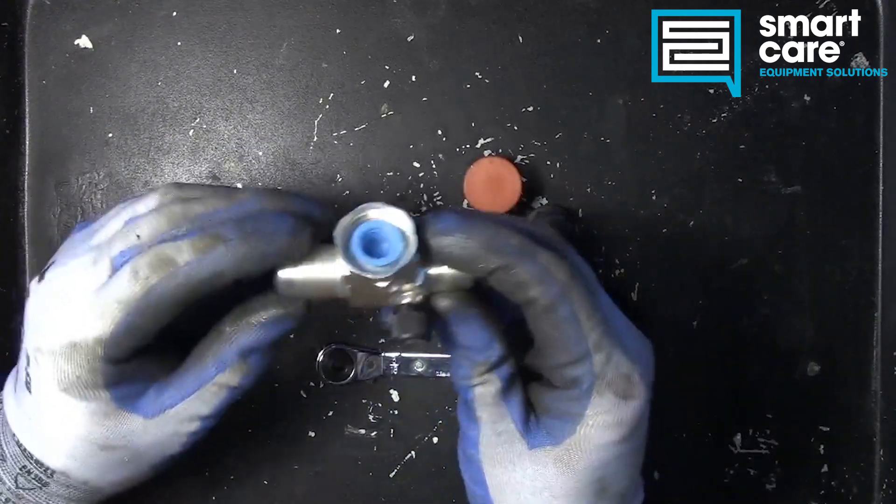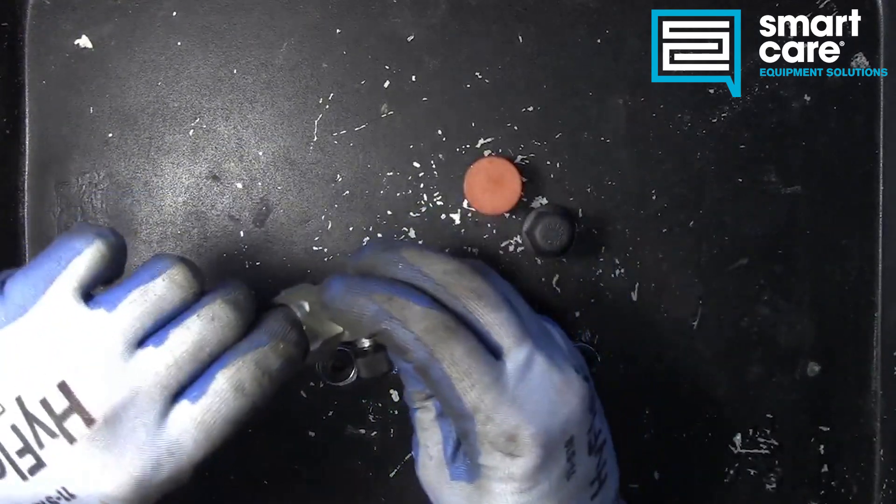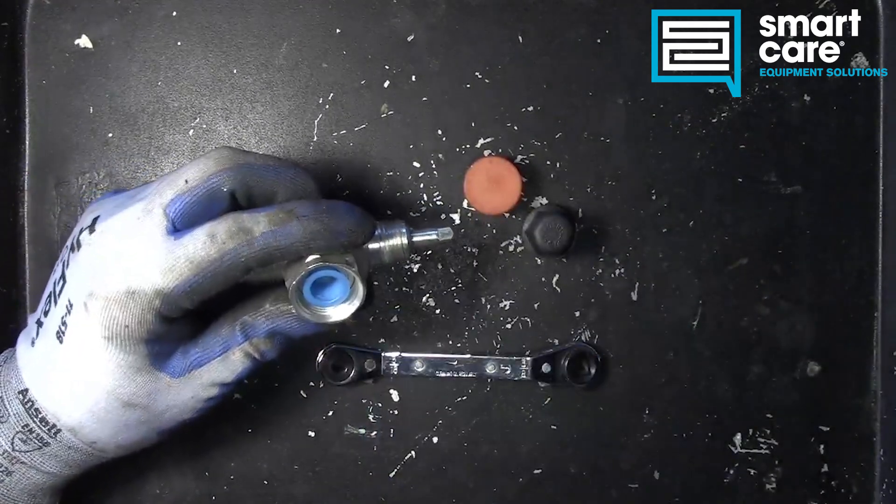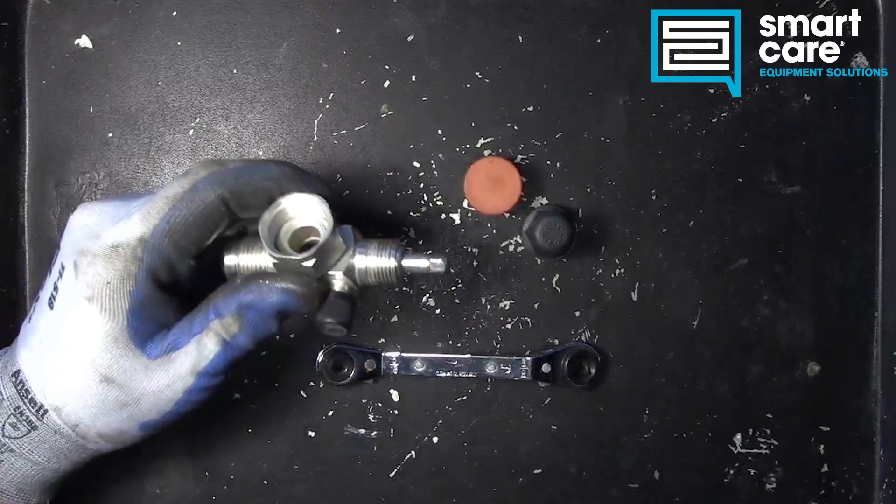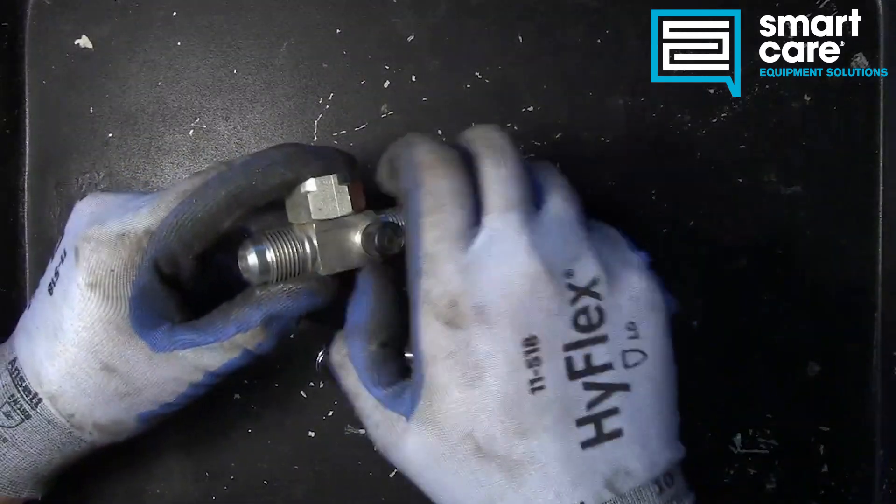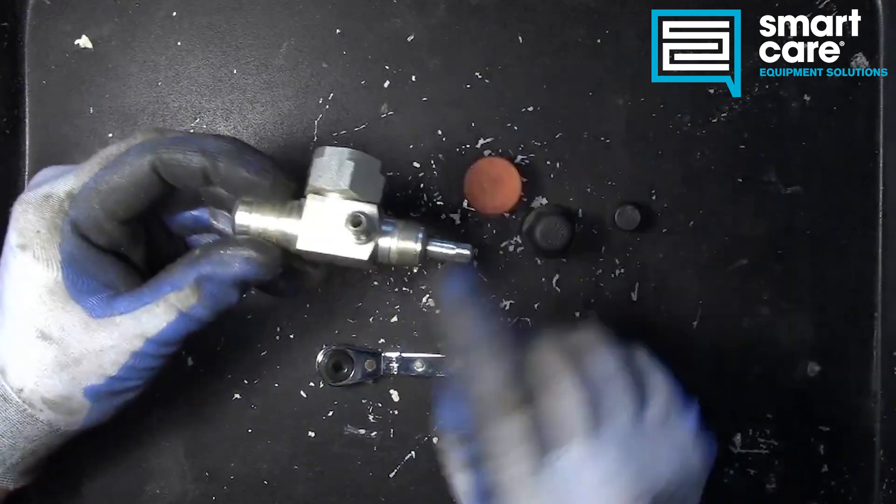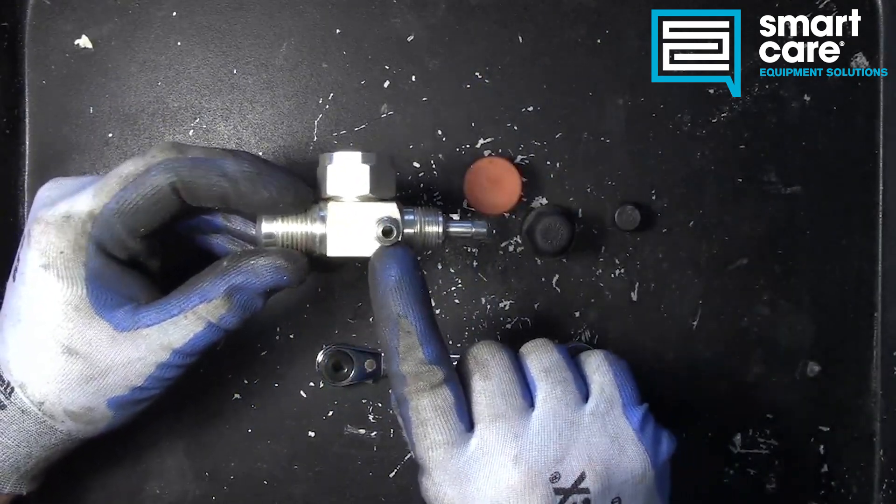This means that refrigerant can flow from the inlet here through the outlet. And if we were to try and connect to this service port, there's no flow to the service port. With the valve in the back seat position, this port is sealed.